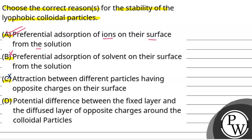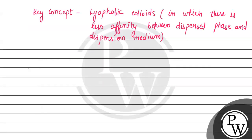Option D is the potential difference between the fixed layer and the diffused layer of opposite charges around the colloidal particles. We have a metal surface on which, suppose, positive charge is adsorbed.